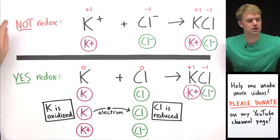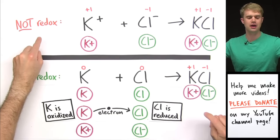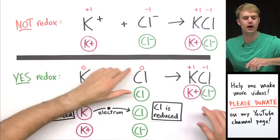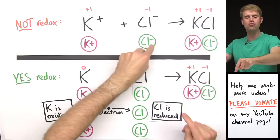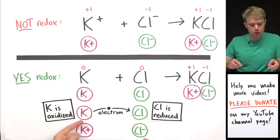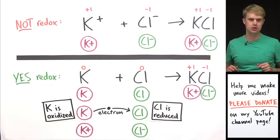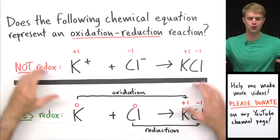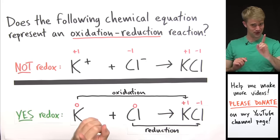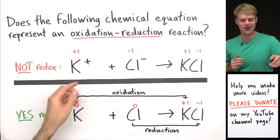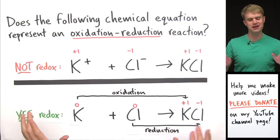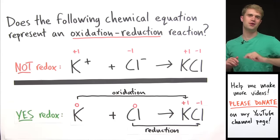The reason why this here was not a redox reaction is because potassium and chloride started out already with charges. So we didn't need this transfer of electrons to give them the charges. So if you ever run into a question like this, remember,